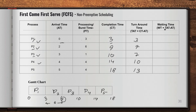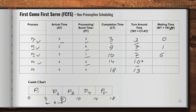Now we calculate the waiting time, which equals turnaround time minus processing time. So: P1 = 3 − 3 = 0; P2 = 7 − 6 = 1; P3 = 7 − 1 = 6; P4 = 10 − 4 = 6; P5 = 13 − 4 = 9. That's your waiting time for each process.